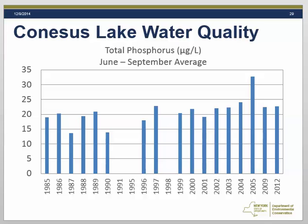Shown here are summer average total phosphorus concentrations in the surface waters of Canisius Lake. We have data going back to 1985, with the most recent measurements collected in 2012. It's difficult to tell if there is a trend or if what we are seeing is just year-to-year variability. Generally, we are seeing concentrations in the 20 to 25 microgram per liter range.